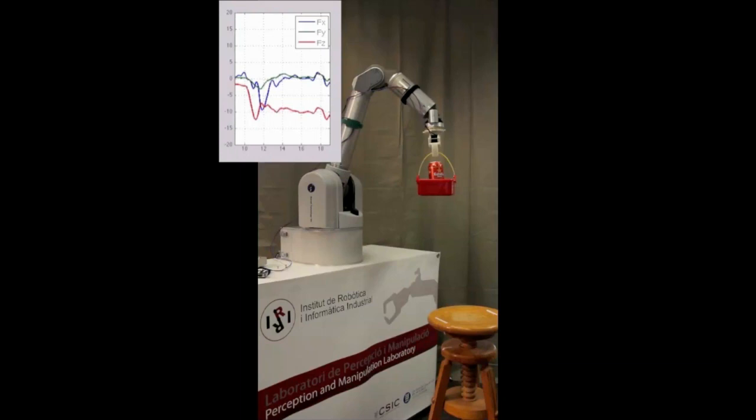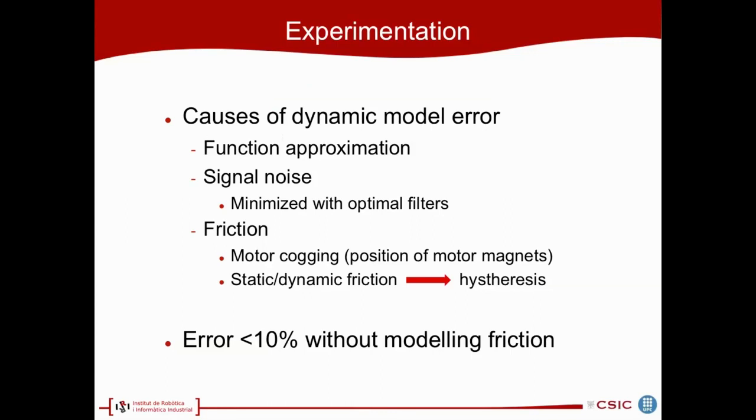As you can see, there was a slight error on the estimation, and this error is caused by the dynamic model error we have. This can come from the function approximation, some signal noise, and mainly it comes from friction. This friction can come from the motor cogging, which is related to the position of the motor magnets, and static or dynamic friction hysteresis. However, overall, we have an error which is less than 10% of the total joint torques without properly modeling the friction, and computationally very, very cheap.